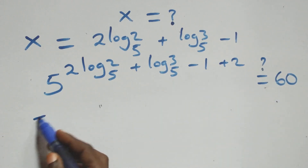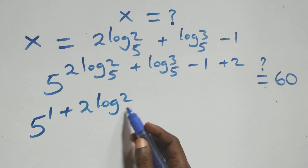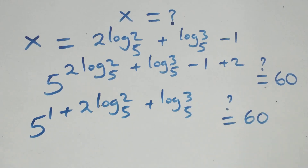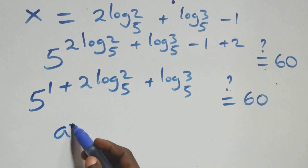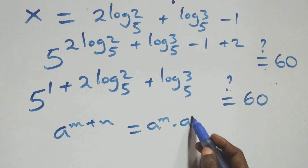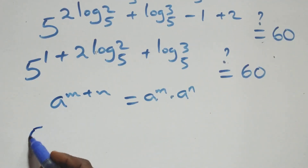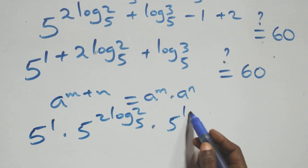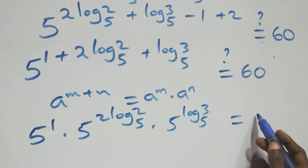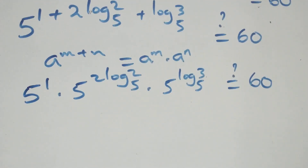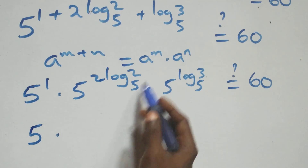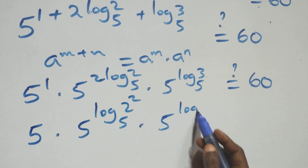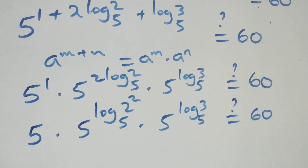We note that 2 minus 1 equals 1, so we rewrite as 5 raised to power 1 plus (2 log₅2 plus log₅3) equals 60. Applying the indices rule a^(m+n) = a^m · a^n, this becomes 5 raised to power 1 times 5 raised to power 2·log₅2 times 5 raised to power log₅3 equals 60. Using the power rule, 2·log₅2 becomes log₅(2²) = log₅4.